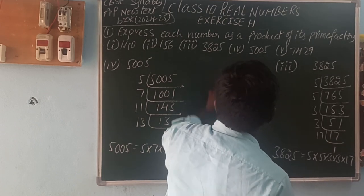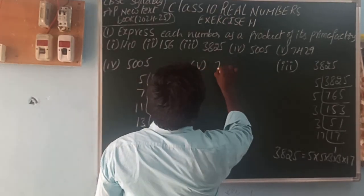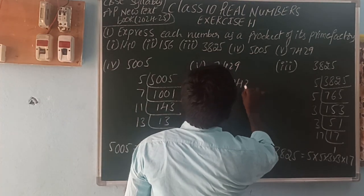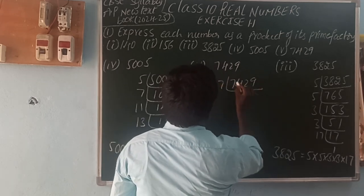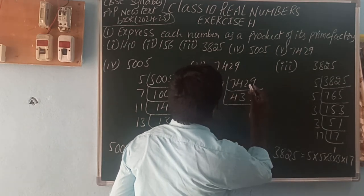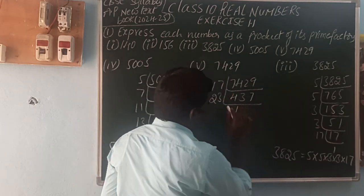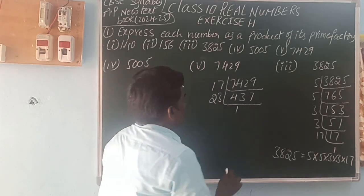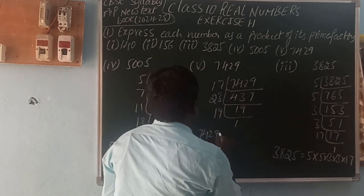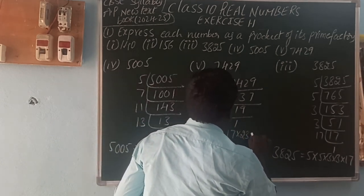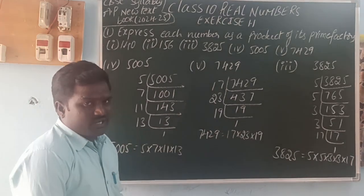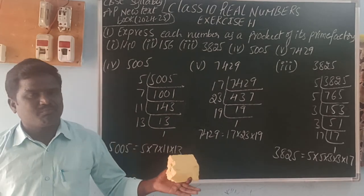The next number is 7429. We can divide this number by 17 to get 437, by 23 to get 19, and 19 divided by 19 gives 1. So 7429 can be written as 17 × 23 × 19. This method is called the prime factorization method — any number can be written as a product of prime factors.